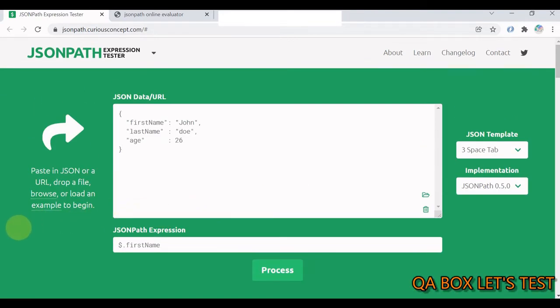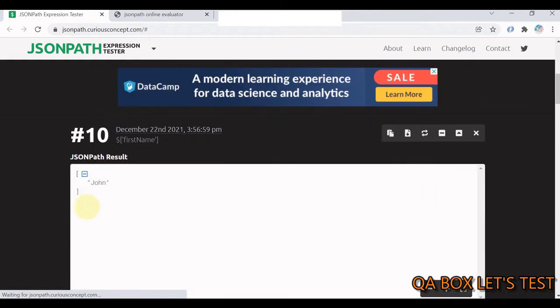Now replace this dot with opening and closing square bracket. Mention the property name inside these brackets. The last step is you have to be sure to put single quotes around the property name. Let's enclose this property name inside these single quotes and click on the process button. There you go. We get the same result back.